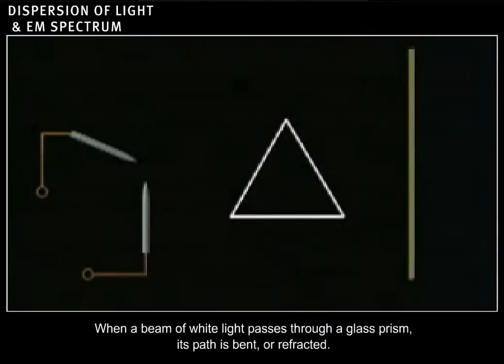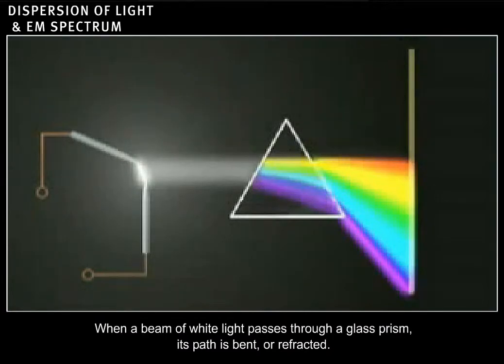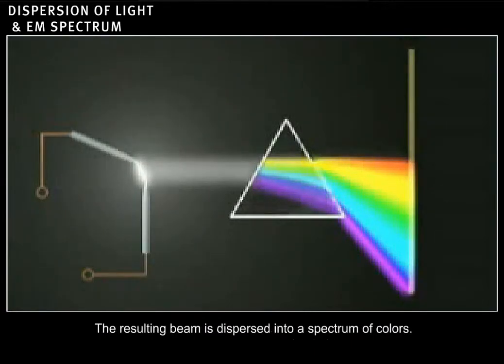When a beam of white light passes through a glass prism, its path is bent or refracted. The resulting beam is dispersed into a spectrum of colors.